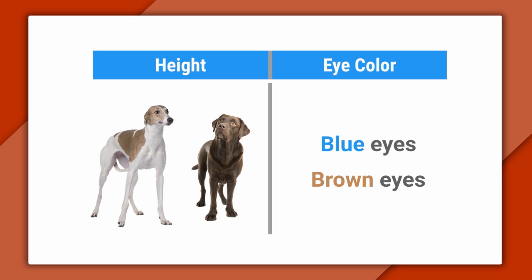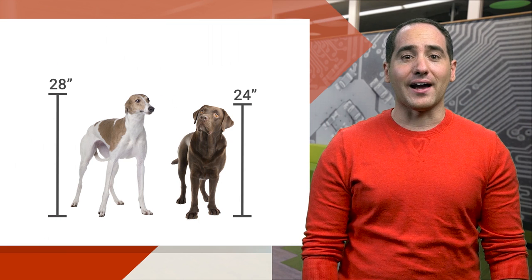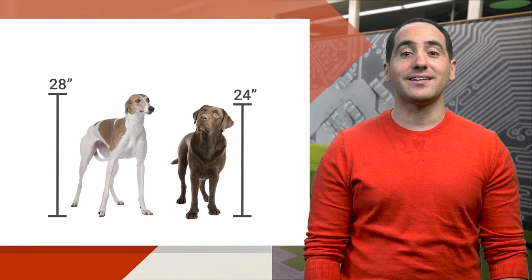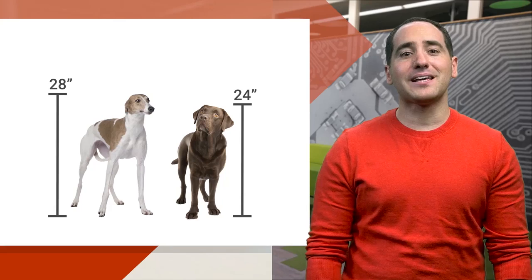First, we'll say that greyhounds are usually taller than labradors. Next, we'll pretend that dogs have only two eye colors, blue and brown. And we'll say the color of their eyes doesn't depend on the breed of dog. This means that one of these features is useful and the other tells us nothing. To understand why, we'll visualize them using a toy data set I'll create. Let's begin with height.